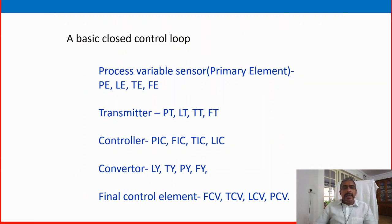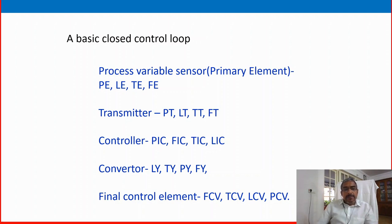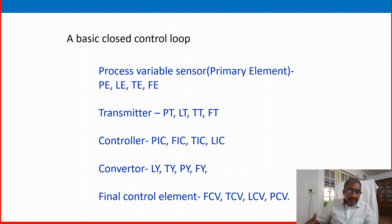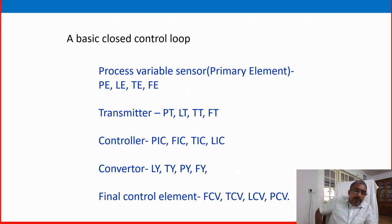Some examples of process variable terminology used in drawing sheets or in the process field: process variable elements are PE (pressure), LE (level), TE (temperature), FE (flow); transmitters are PT, LT, TT, FT; controllers are PIC, FIC, TIC, LIC; converters are PY, LY, TY, FY; final control elements are FCV (flow control valve), TCV (temperature control valve), LCV (level control valve), PCV (pressure control valve). Please review any existing P&ID you have — the next class will cover how to read a P&ID. You can read and understand from the engineering drawing or piping and instrumentation diagram how to understand this terminology. When you go to the field, look for any controller, transmitter, converter, sensor, and control valve.